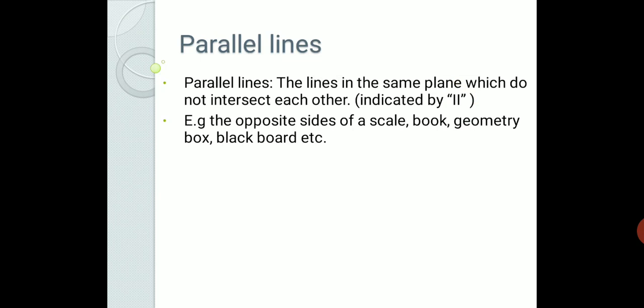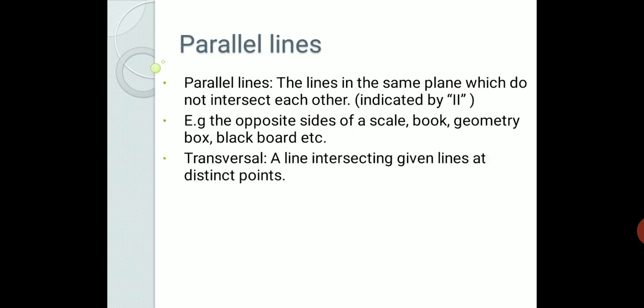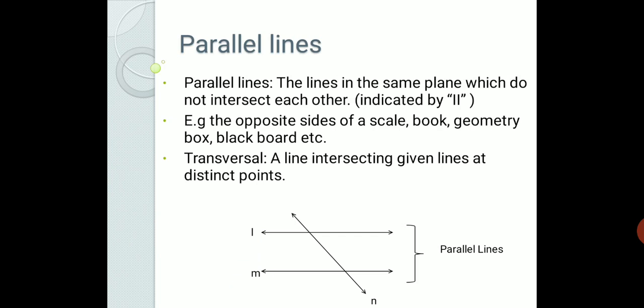Let us revise the concept of a transversal. A transversal is a line intersecting given lines at distinct points. Please remember, a transversal may or may not intersect parallel lines always — if a line is intersecting those lines at distinct points, we call it a transversal. Here, we are going to consider the lines as parallel. Here is a diagram in which line L and line M are parallel lines and line N is a transversal.